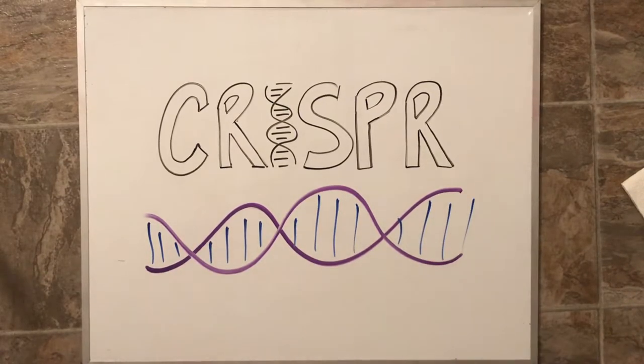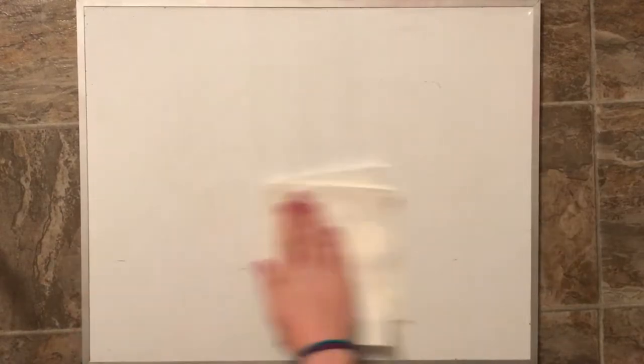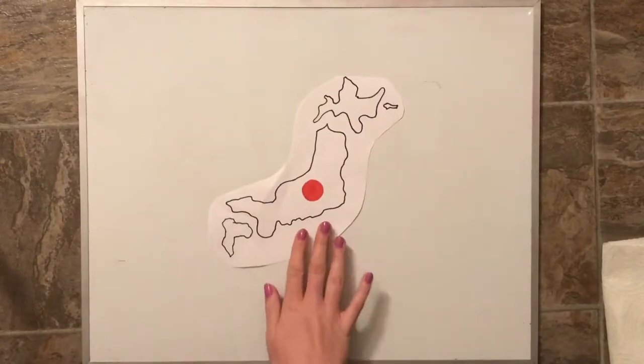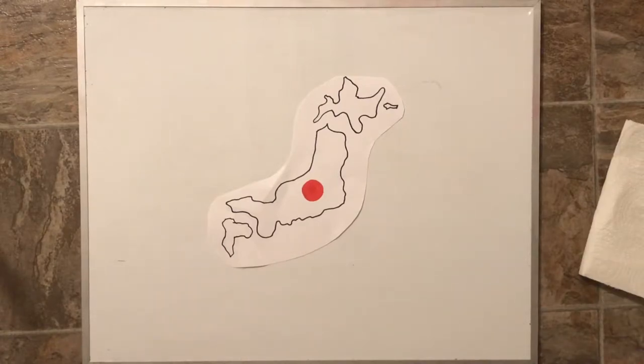CRISPR is the process of copying DNA and using special enzymes called Cas9 to replace the DNA. This was discovered in 1987 over in Japan.